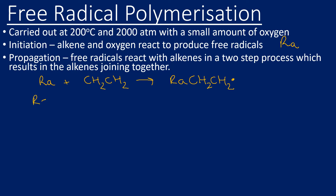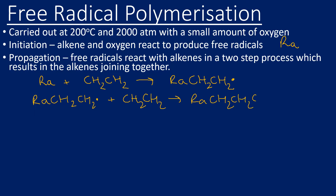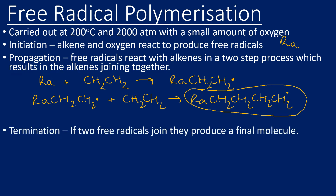The free radical formed in step one goes on to react with more alkene — in this case ethene — and joins into the chain, so we end up joining CH₂CH₂ units. That gives another radical, which can then do further propagation steps, adding another CH₂CH₂, and so on. These chains keep getting longer.